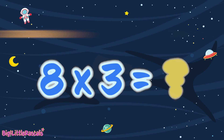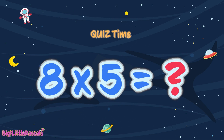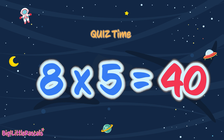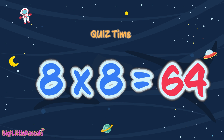Now it's quiz time! Ready? Can you answer this? 8 times 3 equals — the answer is 24. Great work! 8 times 5 equals — the answer is 40. Well done, everyone! 8 times 8 equals — the answer is 64. Excellent, everyone!